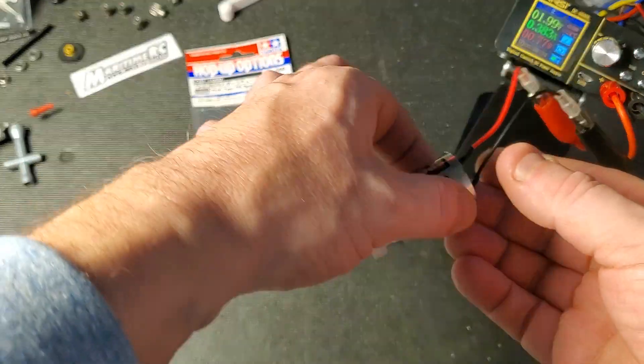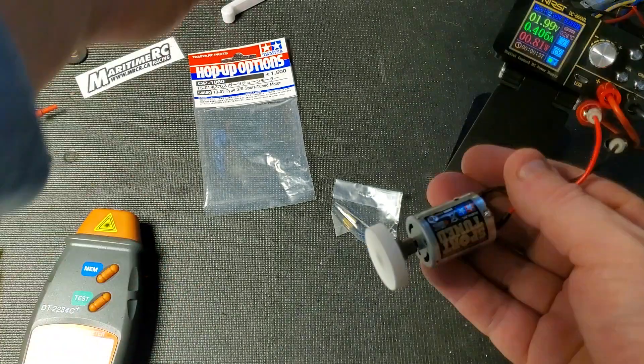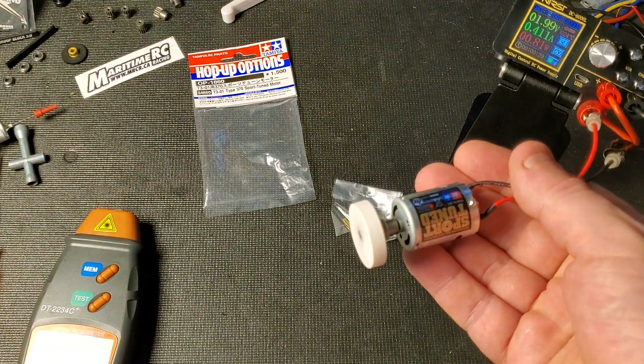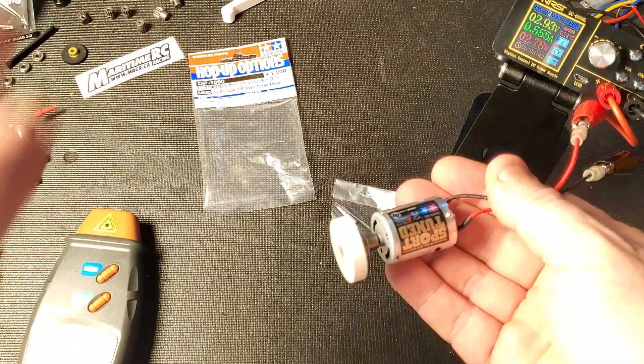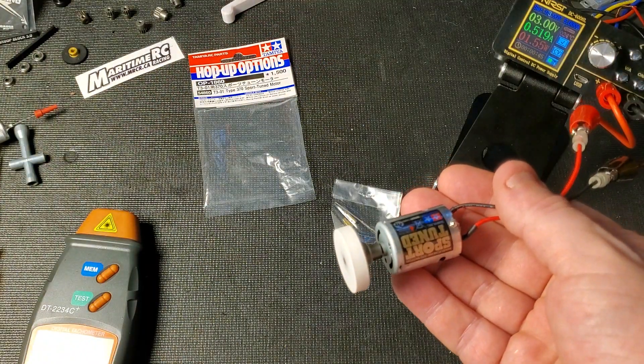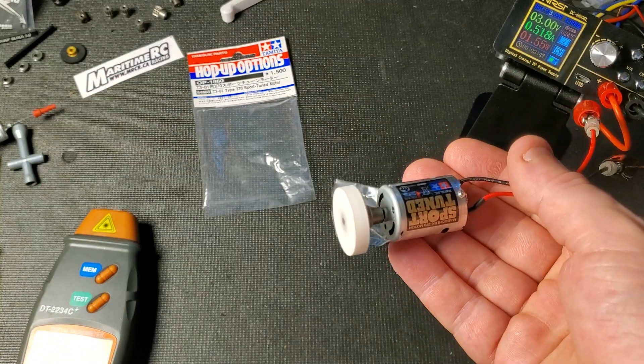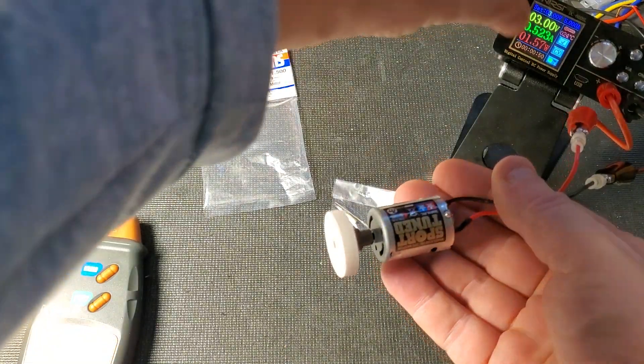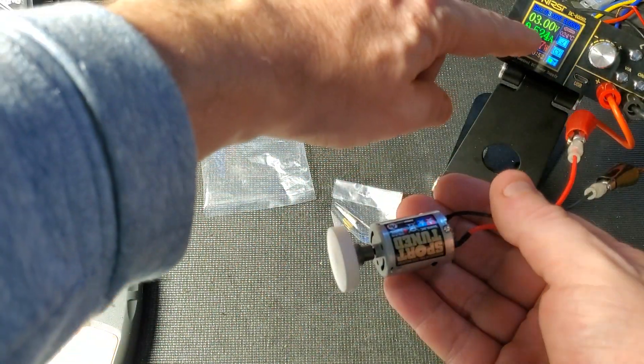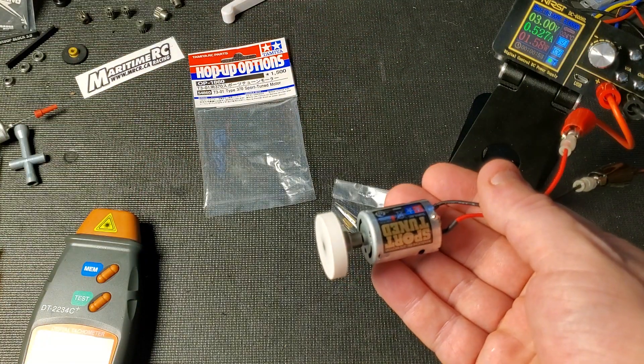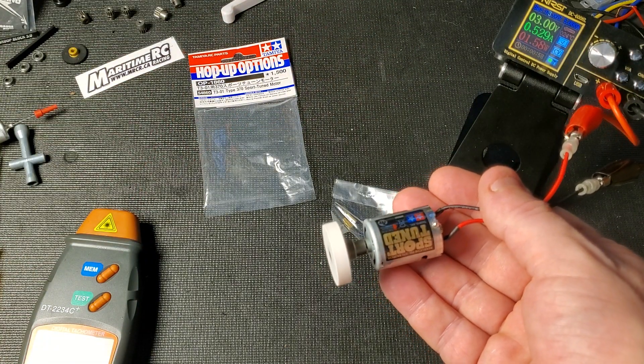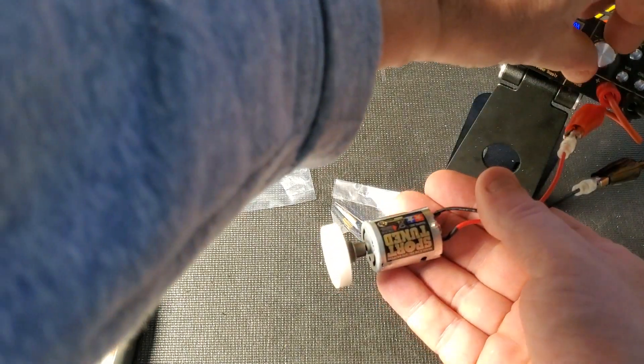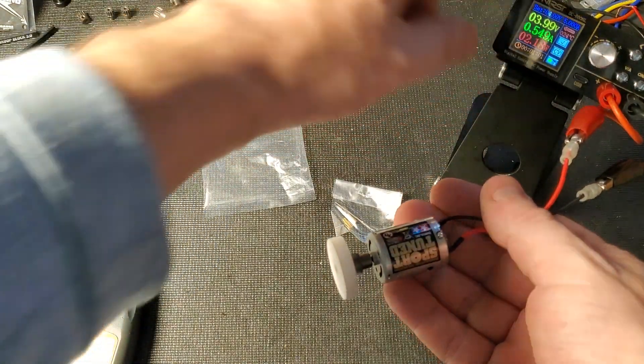Now first off I notice the motor sounds very smooth. We can see it's drawn about half an amp. So let's give it three volt. Again very smooth running motor. Amps are holding very steady you can notice. So this motor is acting like it's broken in. Usually you get a lot of variability in the amps.